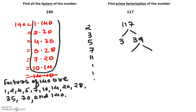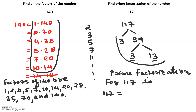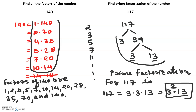Can we still use 3? Yes — 3 goes into 39 giving 13. Both 3 and 13 are prime, so that's where we stop. Our prime factorization for 117 is 3 times 3 times 13, which is 3 squared times 13. Please notice: 3 is a prime and 13 is a prime.